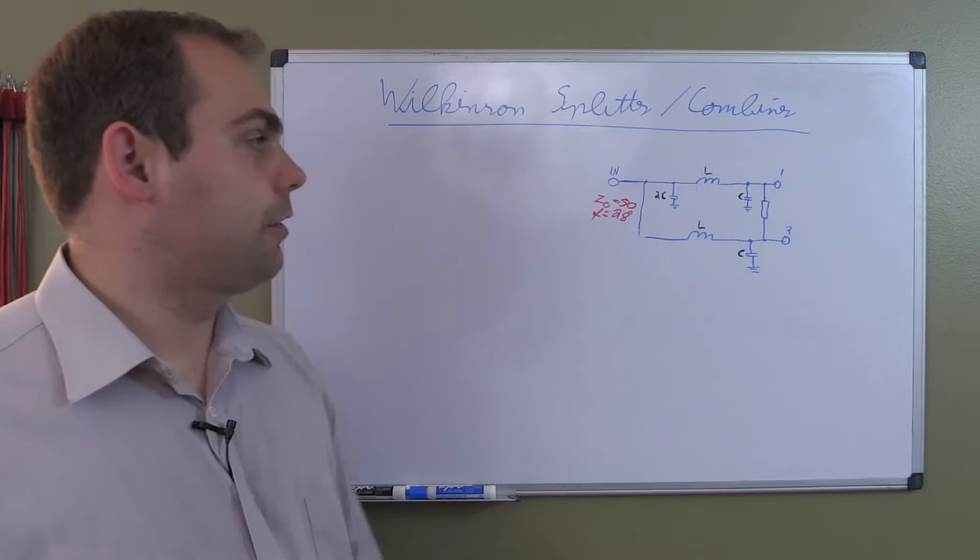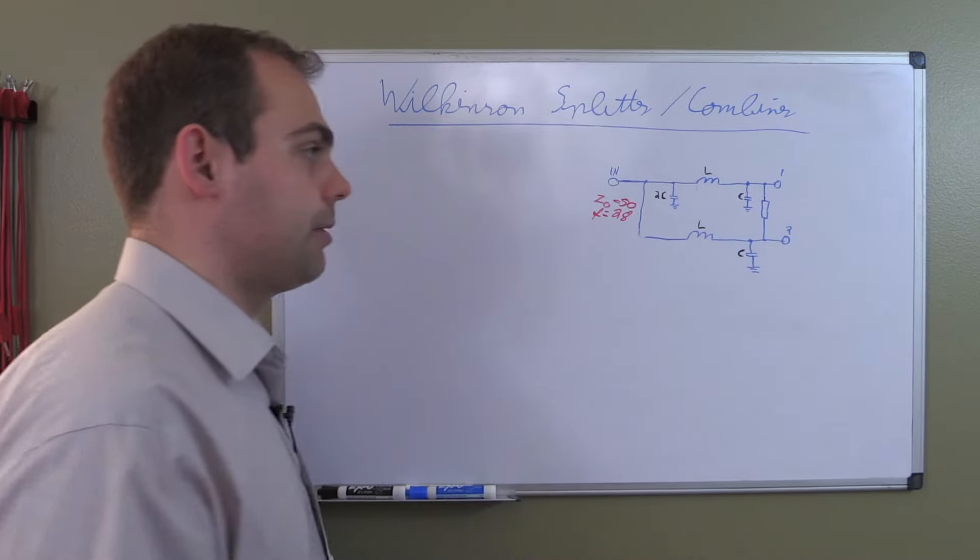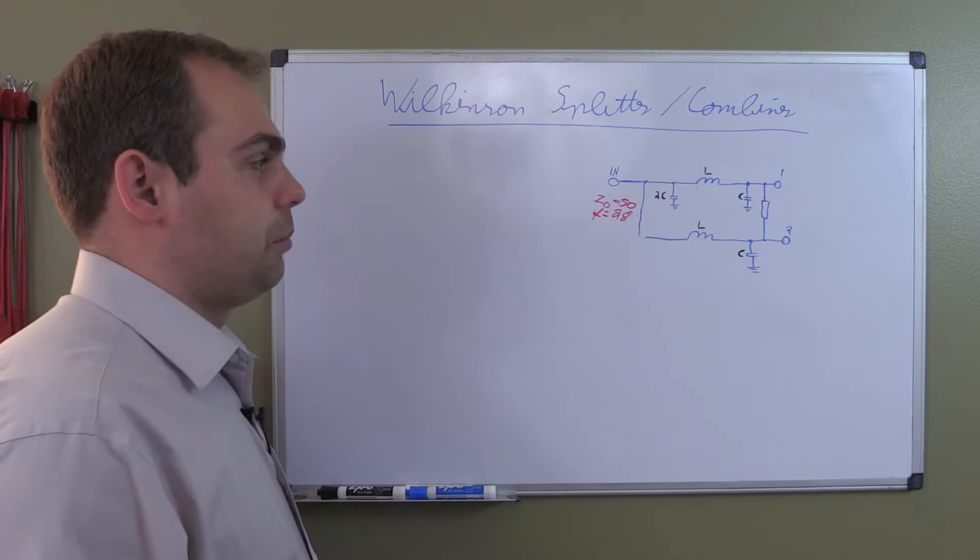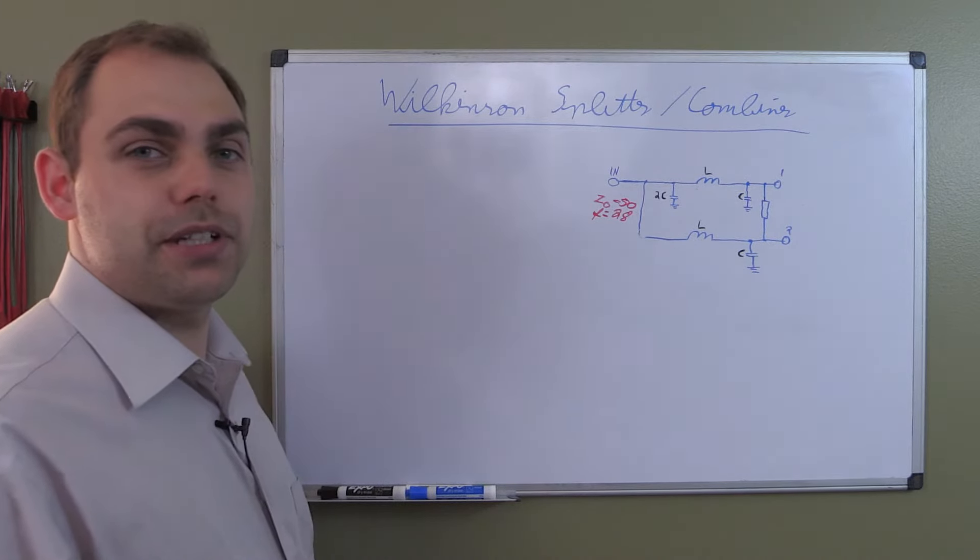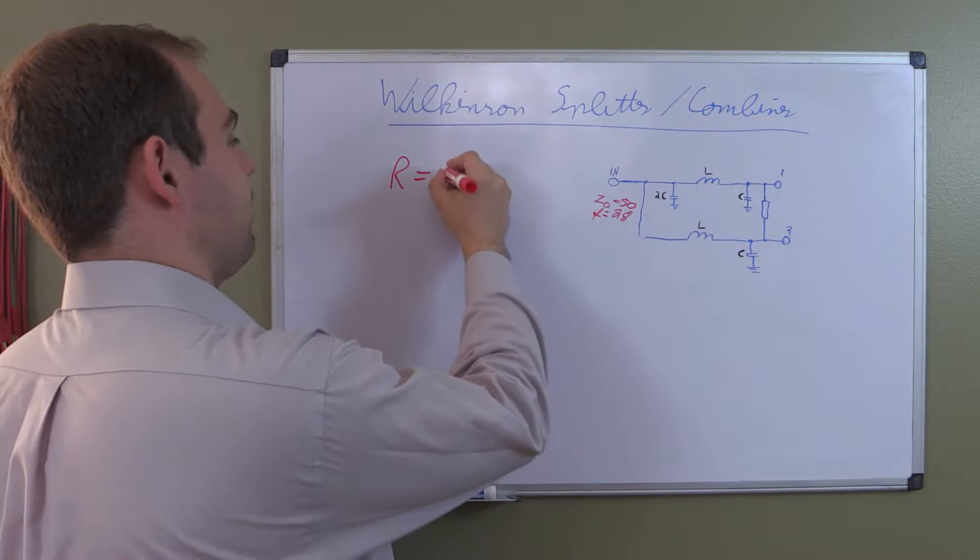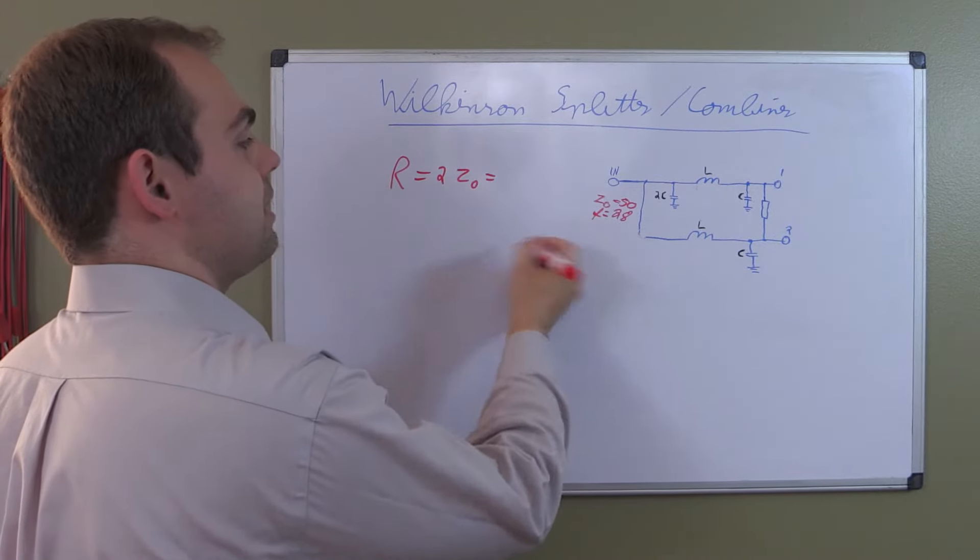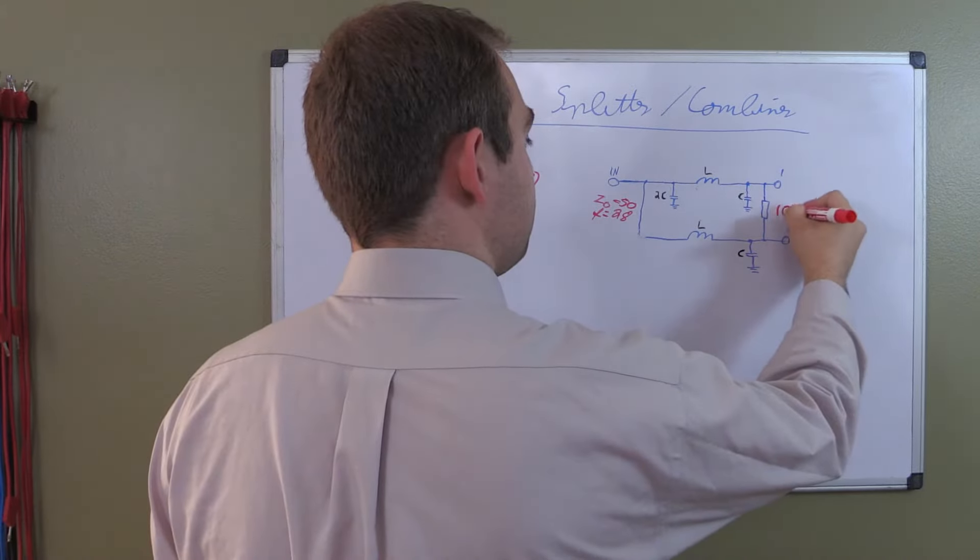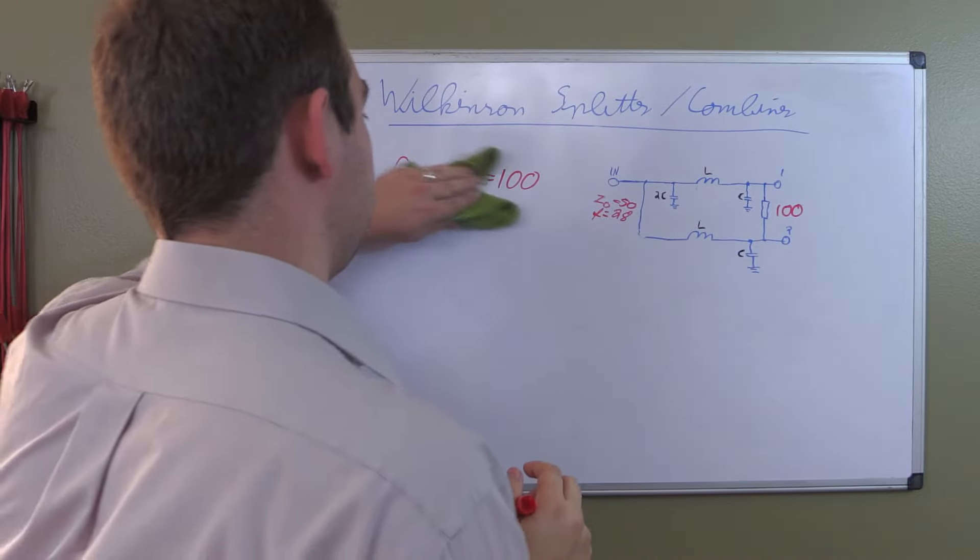Now the first thing we calculate is R, the resistor. Americans may be confused because you're used to this more inductor-like looking thing. The resistor is simply 2 times Z0, so R equals 2 times Z0. In our case, 2 times 50 is 100. So this resistor needs to be 100 ohms. Very simple, first object of our list.